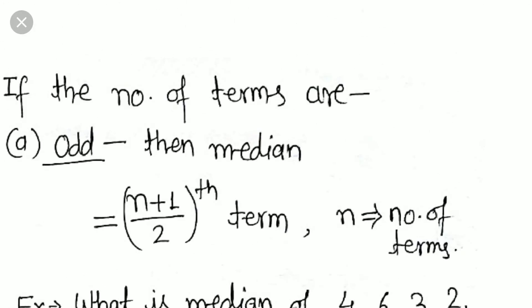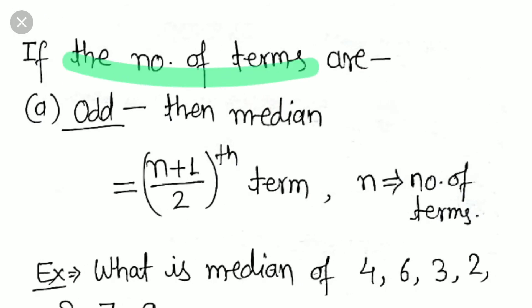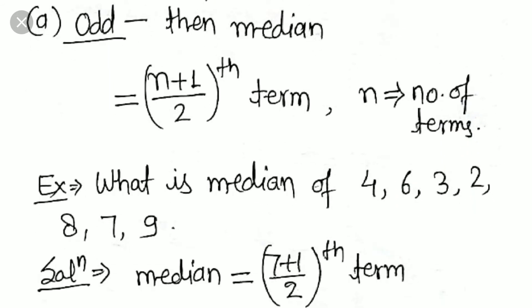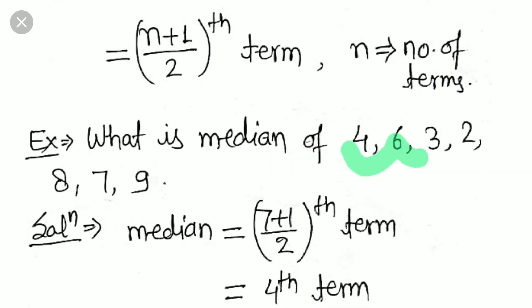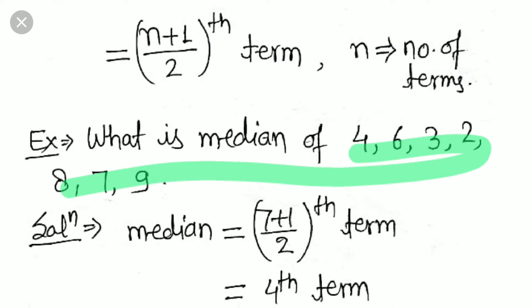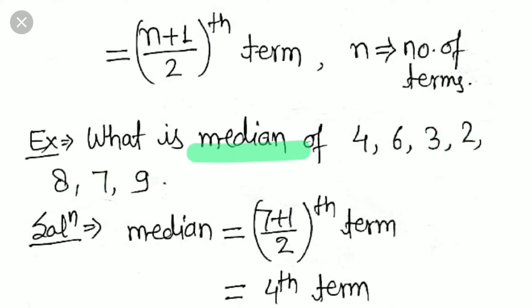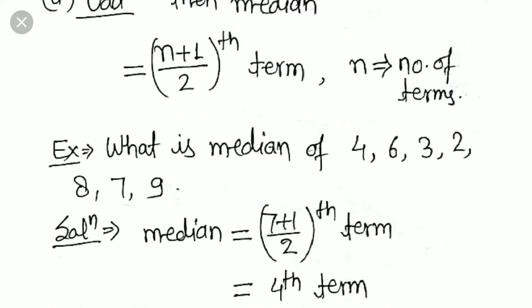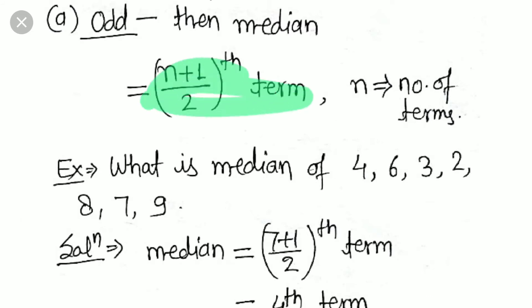When we have data, the number of terms may be odd or even. If the number of terms is odd, the median is the (n+1)/2 th term, where n is the number of terms. For example: find the median of 4, 6, 3, 2, 8, 7, and 9. The number of terms is 7, so the median is the (7+1)/2 = 4th term.